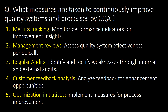What measures are taken to continuously improve quality systems and processes by CQA? CQA does this by metrics tracking — monitoring performance indicators; management reviews — assessing quality system effectiveness periodically; regular audits; customer feedback analysis; and optimization initiatives — implementing measures for process improvement.